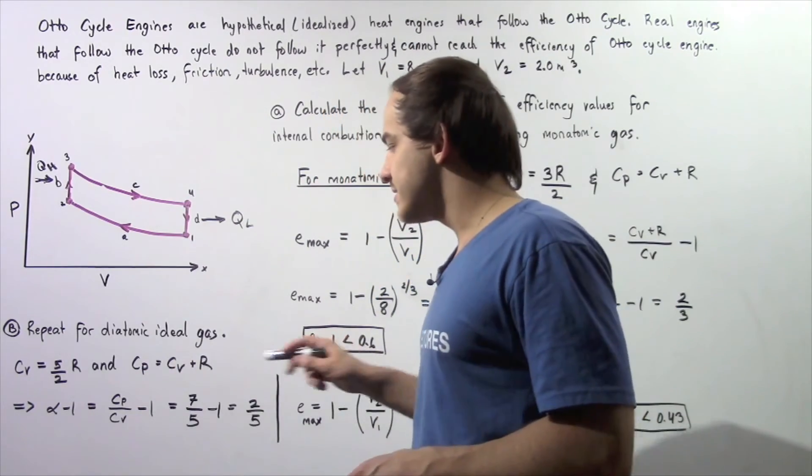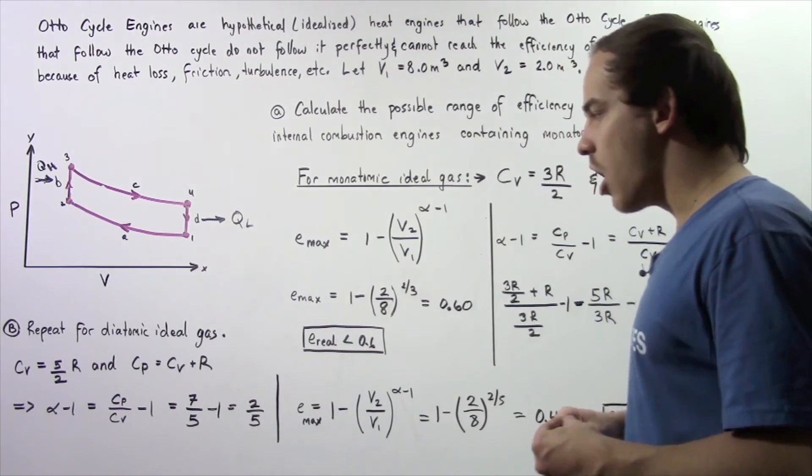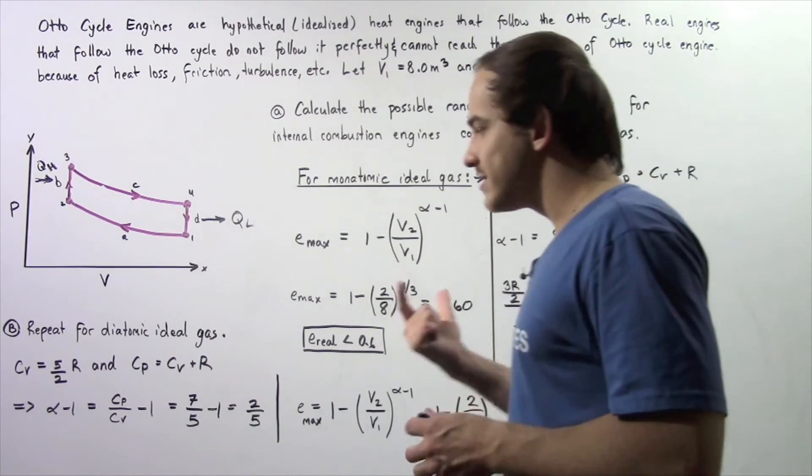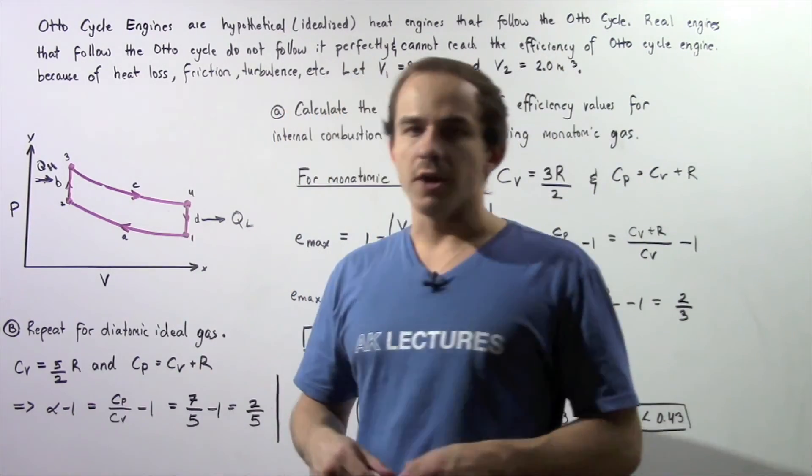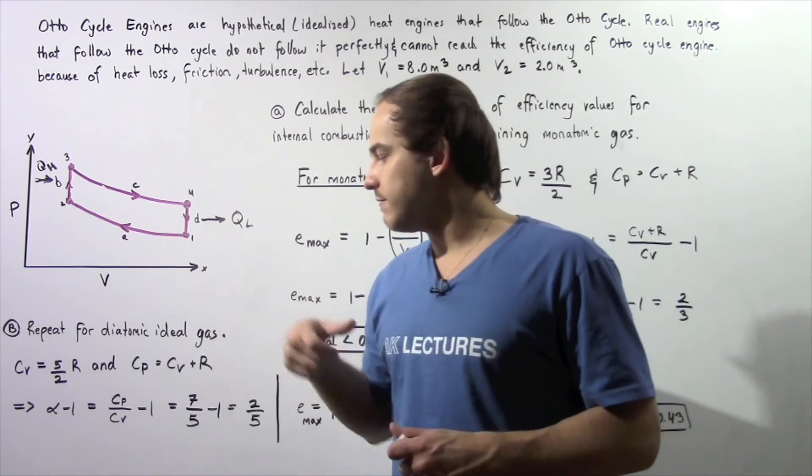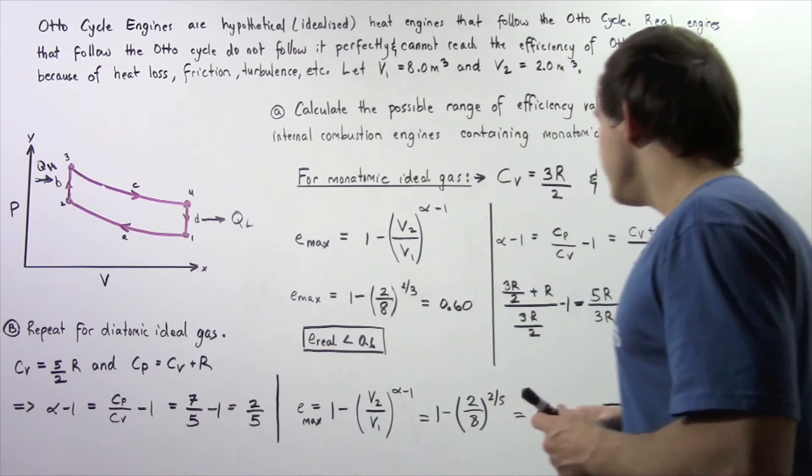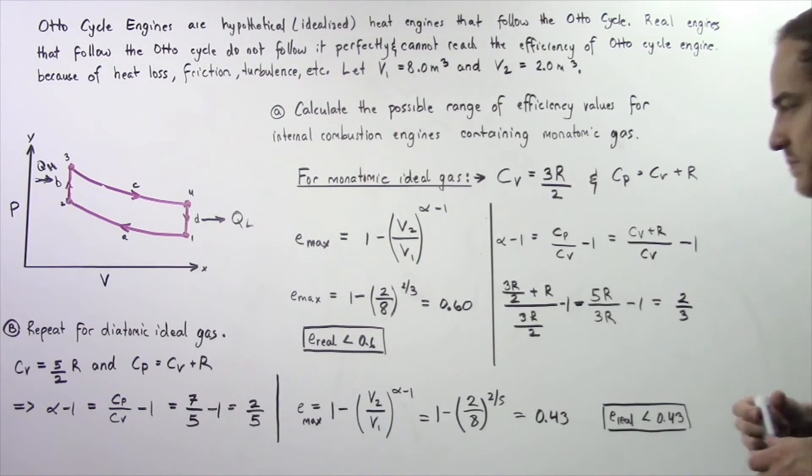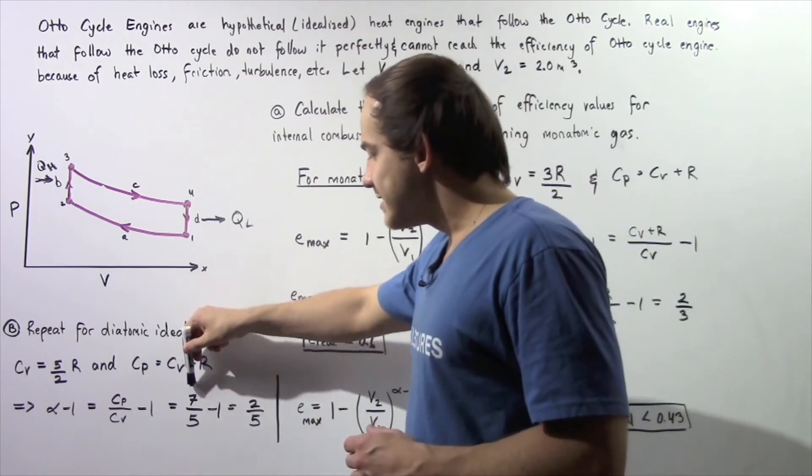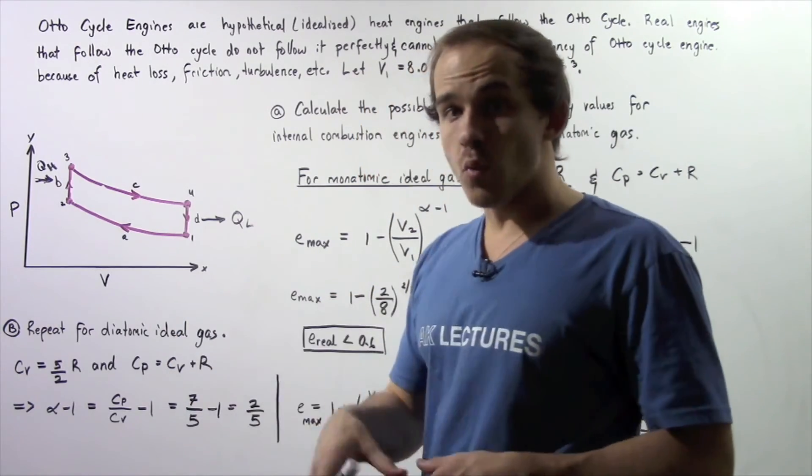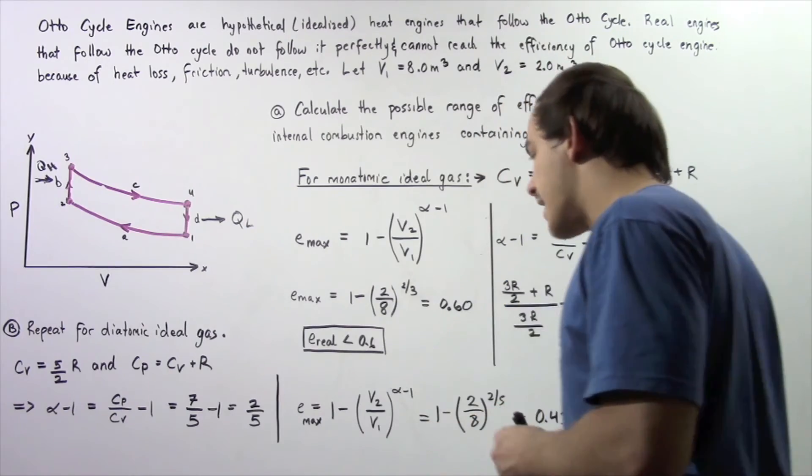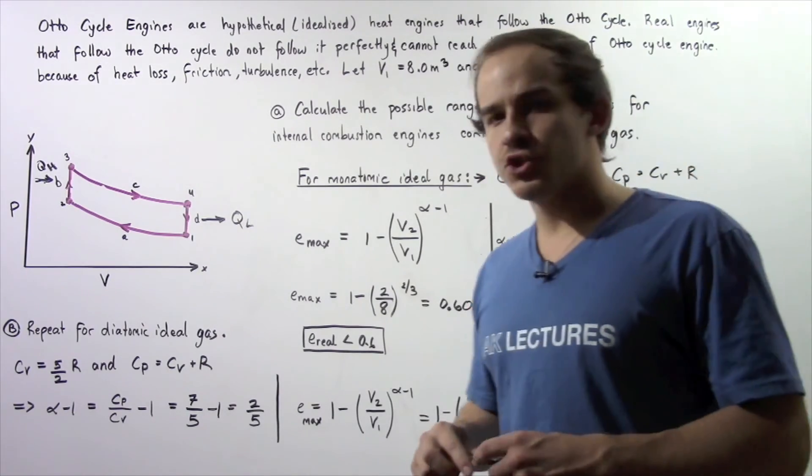Now this remains the same Cp is equal to Cv plus R so once again we want to solve alpha minus R where alpha is Cp divided by Cv so if we follow these same steps we get the following result 7 divided by 5 minus 1 gives us 2 divided by 5 so that means alpha minus 1 is 2 divided by 5.